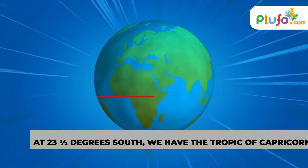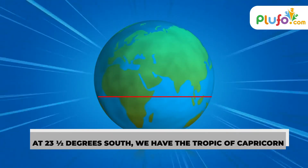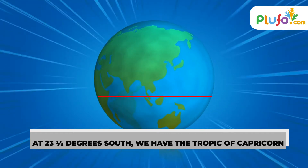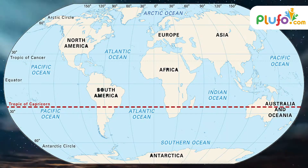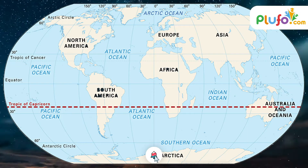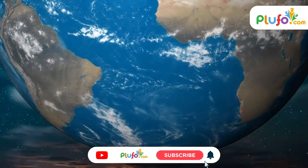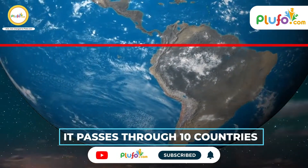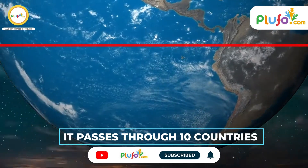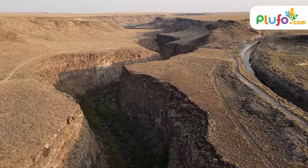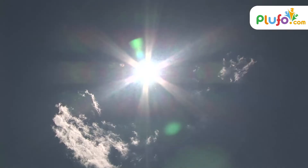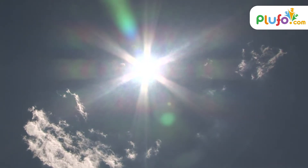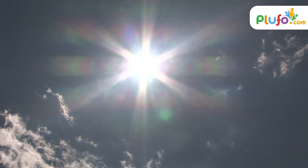Moving 23 and a half degrees south of the equator, we have the Tropic of Capricorn. This area is also referred to as the tropics, but of the southern hemisphere. It passes through 10 countries of the world. During the summer solstice of the southern hemisphere, the sun shines right above the head at noon in this tropical region.